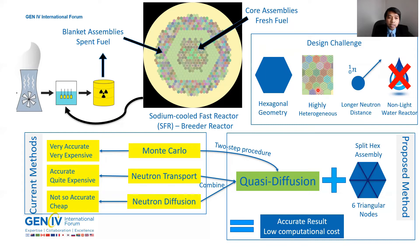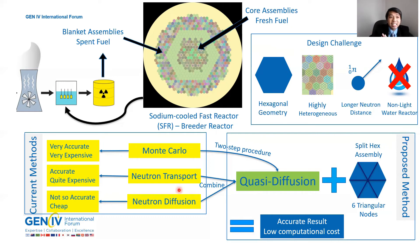In a nuclear reactor, the current methods to design, model, and simulate the reactor are one of three: Monte Carlo, neutron transport, and neutron diffusion. Monte Carlo is the gold standard because it is very accurate, but also very expensive computationally, as it simulates neutron movement using a large number of statistical particles. Neutron transport is still very accurate but quite expensive, modeling neutron movement in different angular directions. Neutron diffusion is the least accurate but cheapest in terms of computational cost.